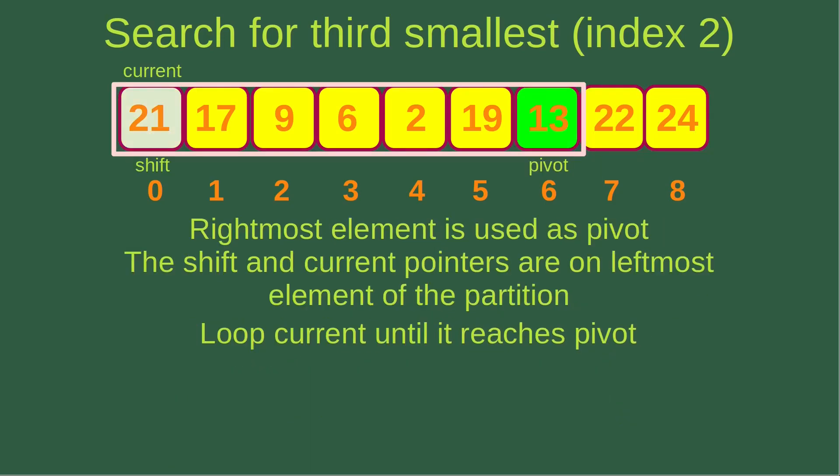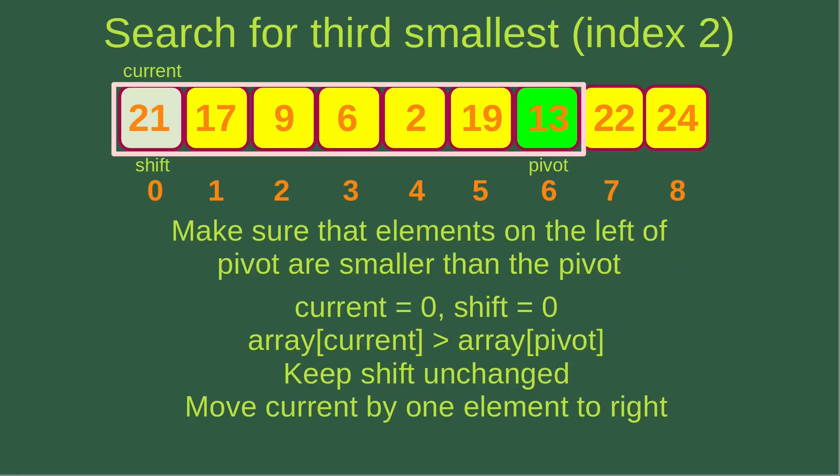We now concentrate on the 7 elements on the left-hand side of the previous pivot. The rightmost of these elements becomes the new pivot, which is 13. The shift and current pointers are placed on the leftmost element at index 0. At current index 0, the element 21 is larger than pivot 13, so we keep shift unchanged and move only the current index to the right. At current index 1, element 17 is also larger than pivot 13, so again shift stays at 0.